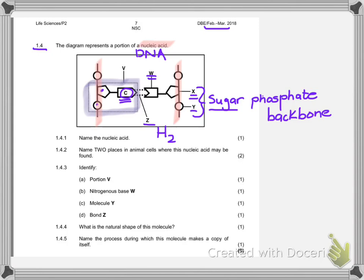So let's have a look at the questions now that we've unpacked the picture. So the very first question says name the nucleic acid and we've just done that. We knew it was a DNA molecule. The second question says name two places in animal cells where this nucleic acid may be found. Now this is what I mean by a straightforward question but if you make a mistake from the very beginning the rest of these questions are going to be incorrect. So you run the risk of losing easy marks over something small and trivial.